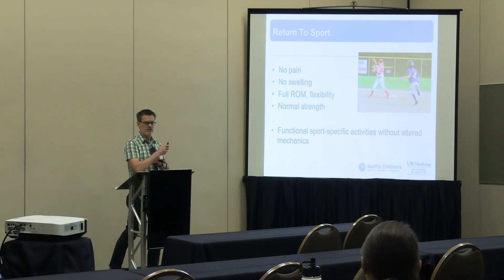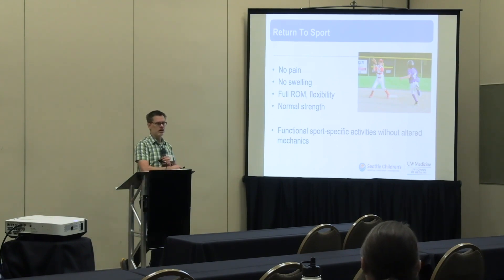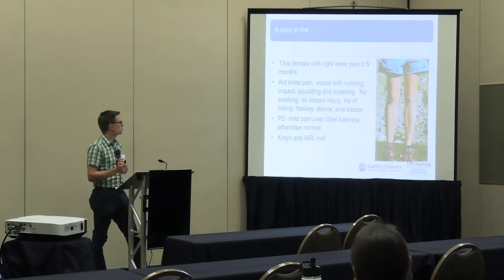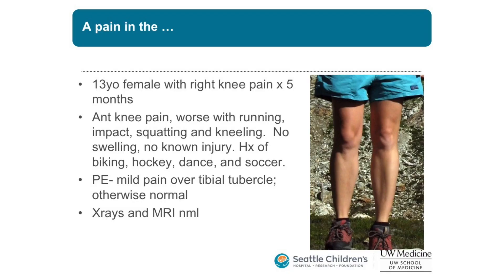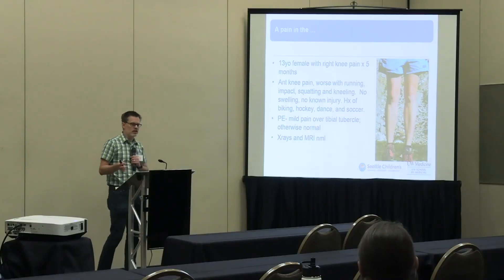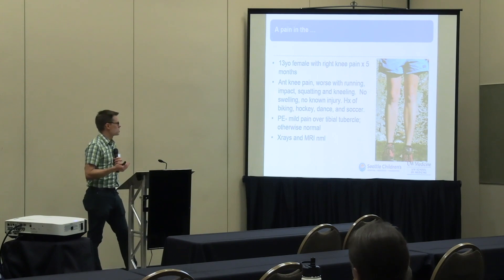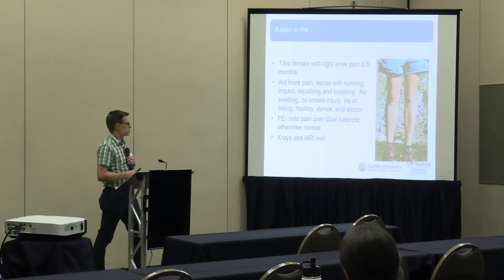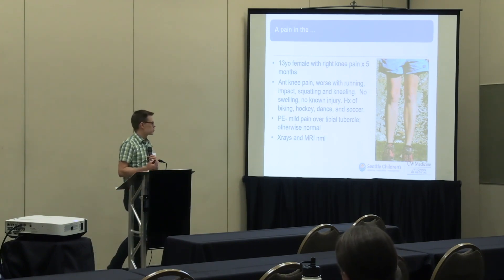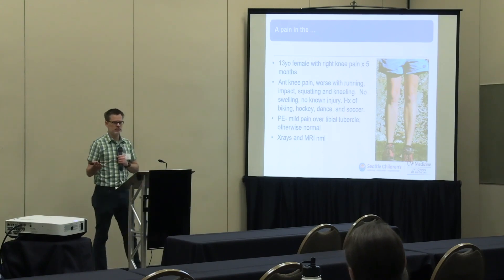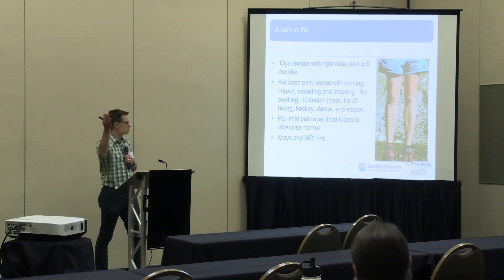Here's a case: a 13-year-old female with right knee pain for about five months. It's anterior, worse with running, impact, squatting, and kneeling. No swelling, no known injury — it just kind of came on. She plays biking, hockey, dance, and soccer. The pain is directly over the tibial tubercle. Anyone know what that is? That's Osgood-Schlatter.